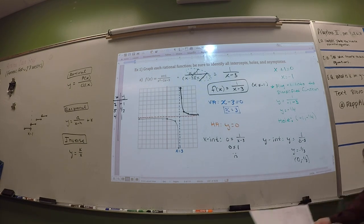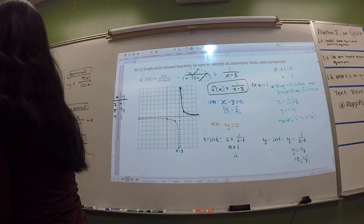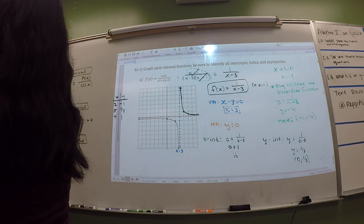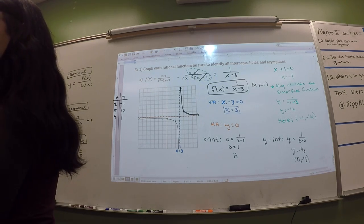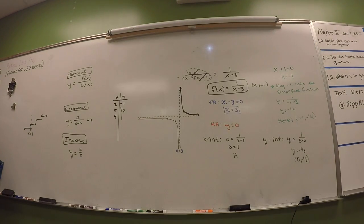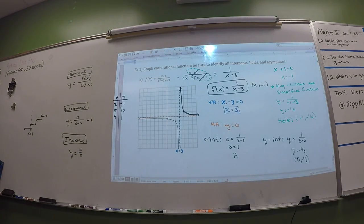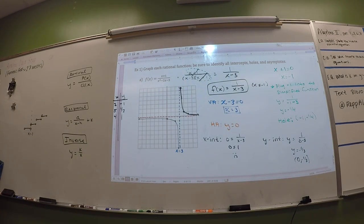A slant asymptote only replaces horizontal — you can't get a slant for both horizontal and vertical. So if there's a vertical, you either have horizontal or slant. If you have a horizontal, you're not also going to have a slant. It's one or the other. With rational functions, if you don't have a vertical asymptote, you wouldn't have other ones either. Exponential functions have asymptotes too, but I'm talking strictly about rational functions here.